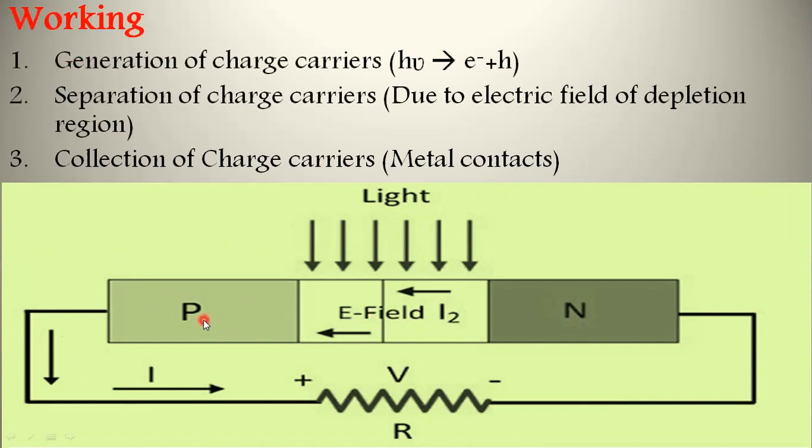Third is collection of charge carriers. The electrons reaching the N side are collected by the front electrode attached to the N side, and the holes reaching the P side are collected by the back electrode connected to the P side. Thus, the P side becomes more positive and the N side becomes more negative, giving rise to photo voltage. When external load is connected, a photocurrent IL flows through the load.